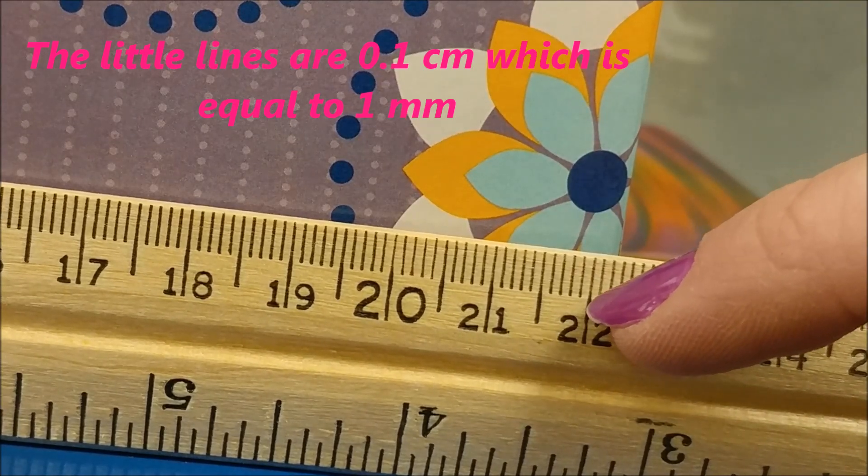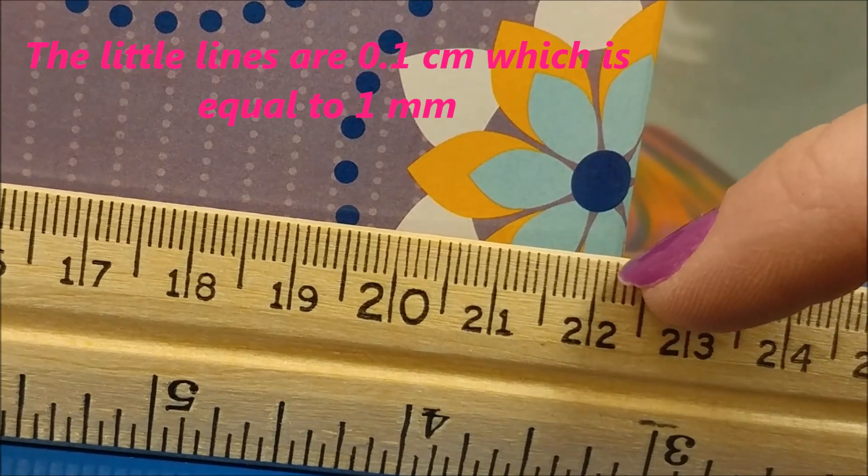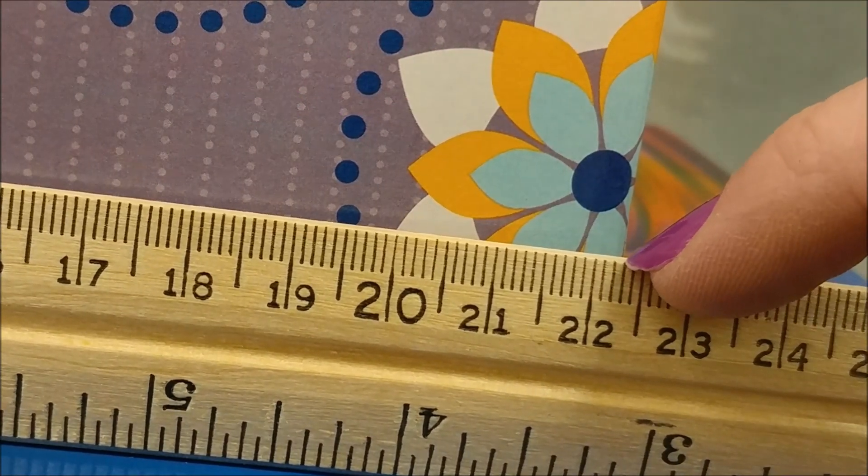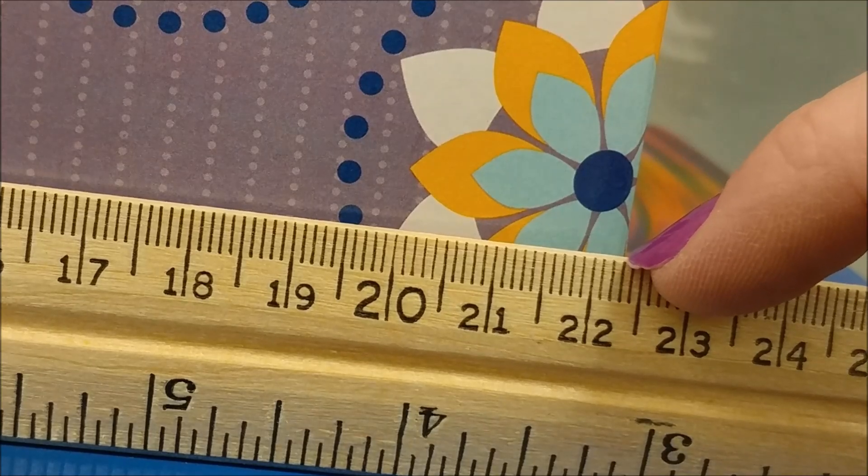So it is crossing at 0.1, 0.2 and a half. We're going to go ahead and round up to 22.3 centimeters.